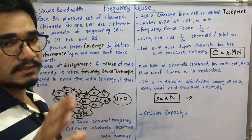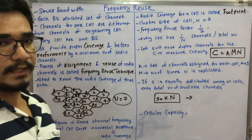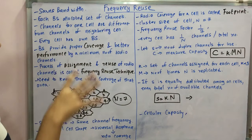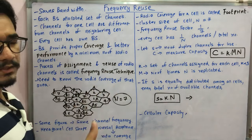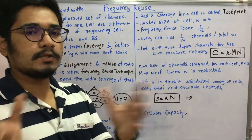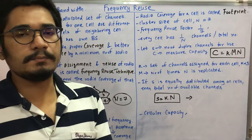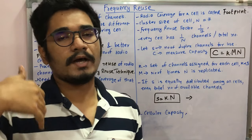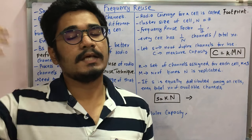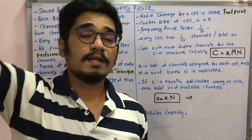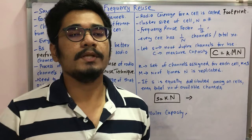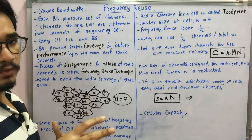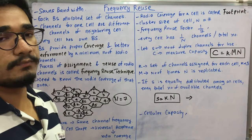Next is the concept of the base station, which we'll cover in detail in the GSM architecture. For now, you need to know that each base station facilitates communication between mobile devices. For example, if I call you, there may be a base station in my area and one in your area to facilitate that communication. Each base station is allocated a set of different channels.